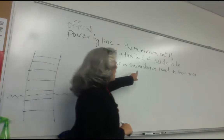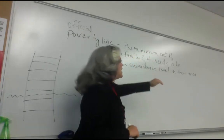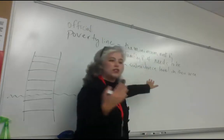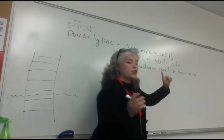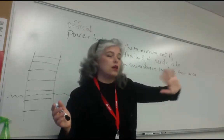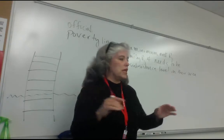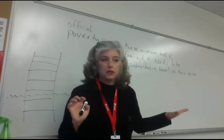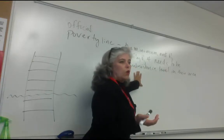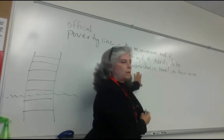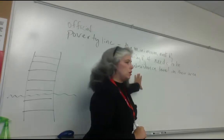The official poverty line is the minimum amount of money needed for a family of four to be at subsistence — survival level. We're not talking about electricity, an unlimited data plan, or even a Honda, let alone a Mercedes. What's required for subsistence? The basic necessities: food, shelter, clothing, and potable water.